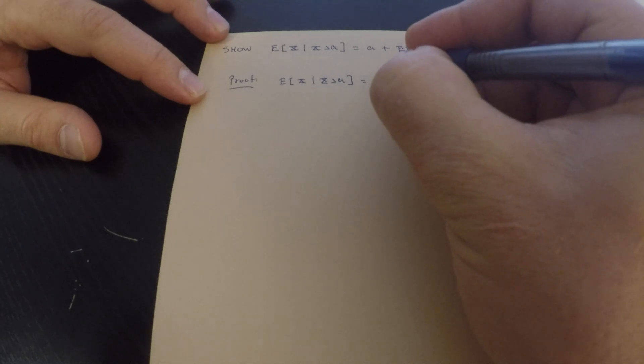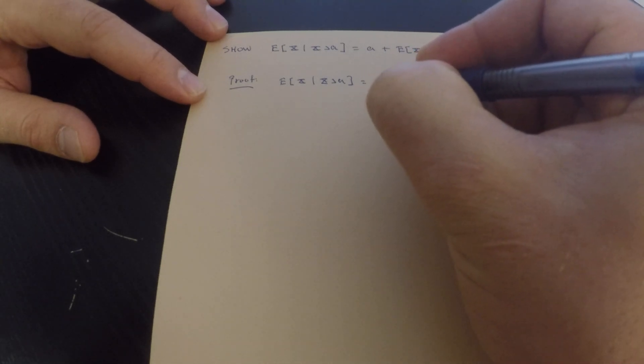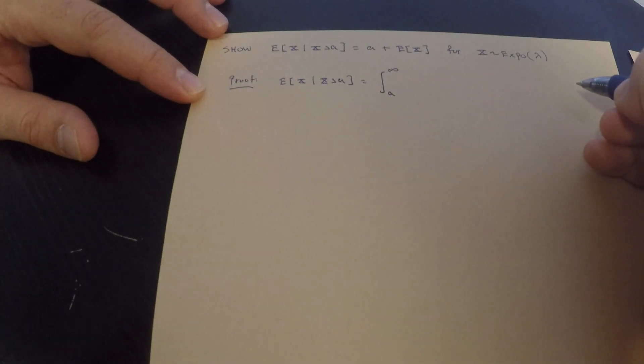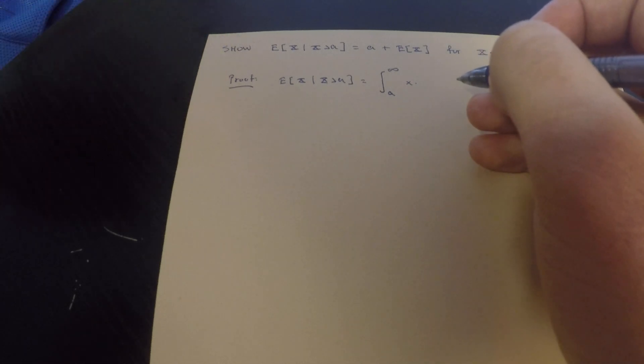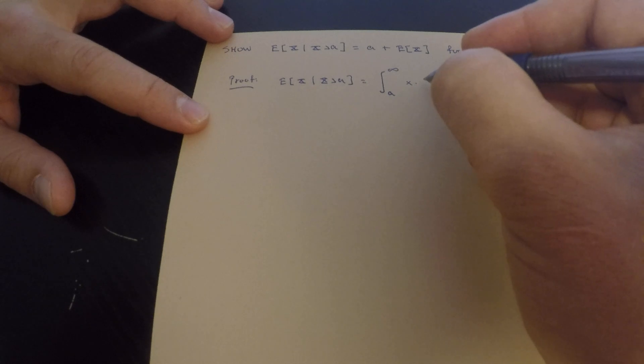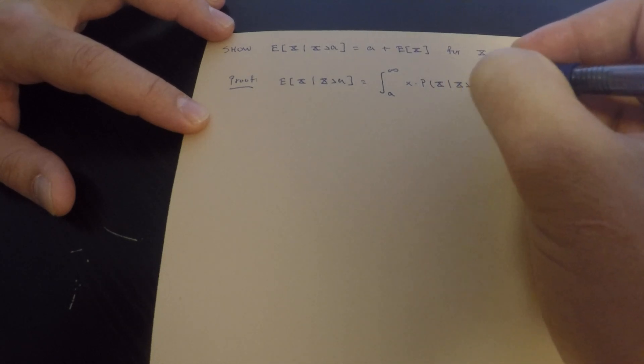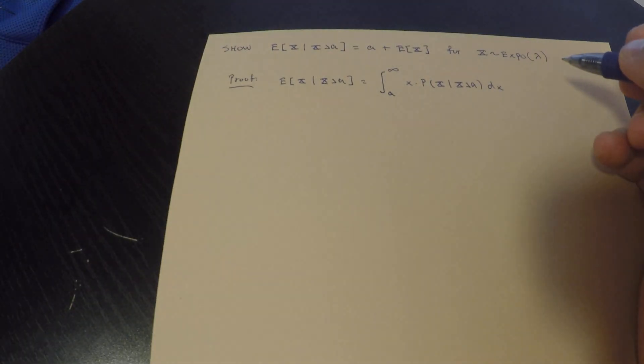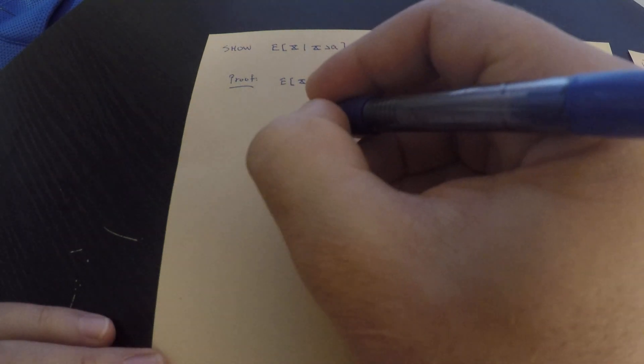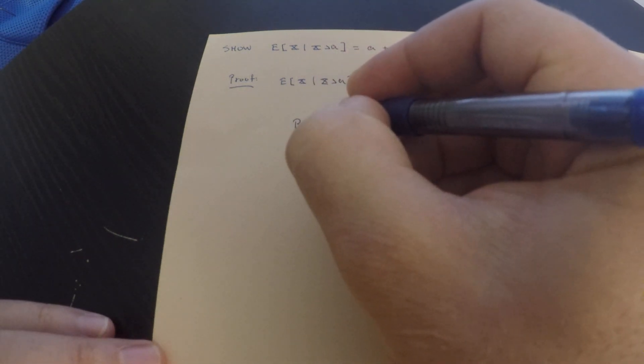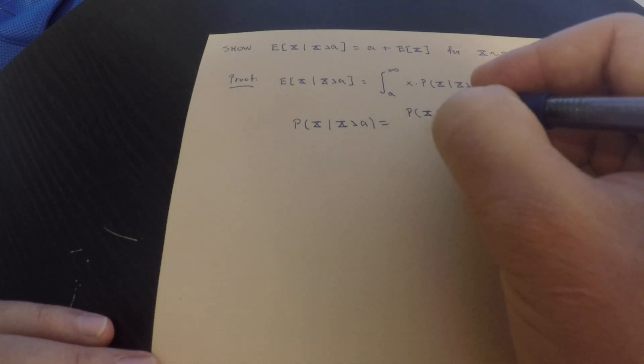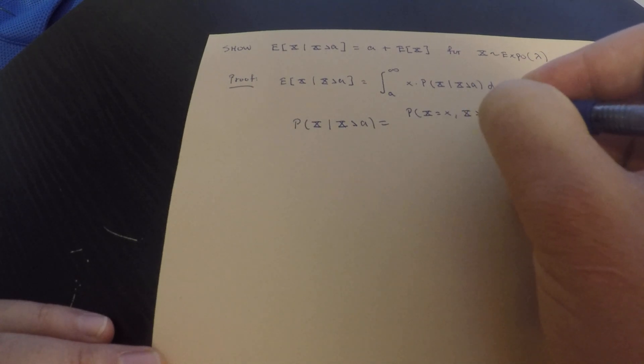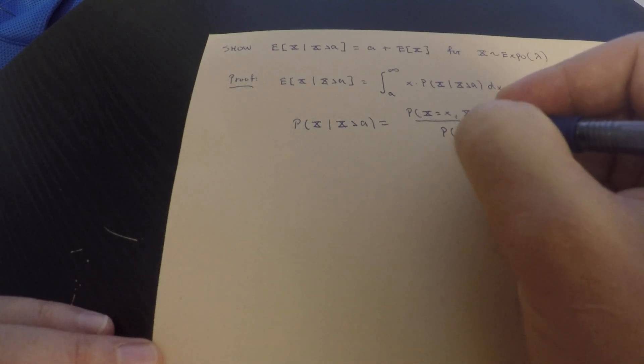What is the expected value of x, given x greater than a? So I did make, I actually did cover this in a previous video, but I'm just going to cover it again real quick. By definition, this is equal to the integral over a to infinity, and I need to multiply x to the conditional density function. So this is equal to basically the probability of x, given x greater than a, dx. So what is this conditional density function? The probability of x, given x greater than a, is equal to the probability of x equals x and x greater than a, divided by the probability that x is greater than a.